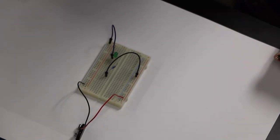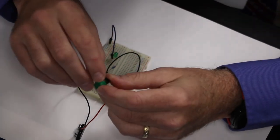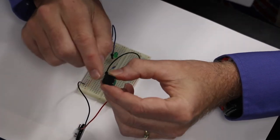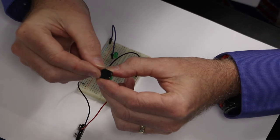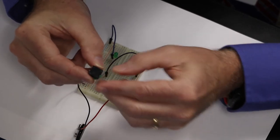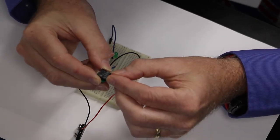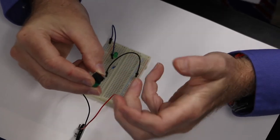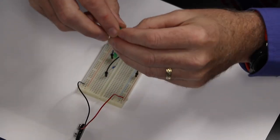Okay, now we're ready to move on to phase two, which is adding our button. Pretty straightforward. If we look at our button, we have four little terminals. These sides are connected and these sides are connected. So all we have to do is put it in the breadboard and then move a jumper cable.